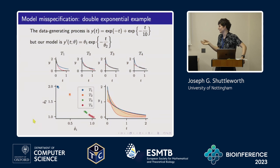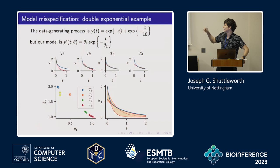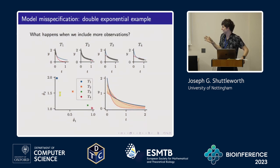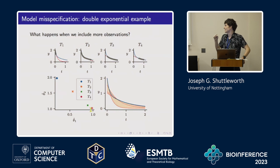From those different parameter estimates we get lots of really different predictions when we try to predict for other time points. The colors show the different parameter estimates from the different experiments — there's a big difference between experiments but comparatively little variability within the same experiment. We're particularly interested in the limit when we observe lots of data, where the sampling variance of these distributions shrinks right down, highlighting the difference in where these estimates end up.